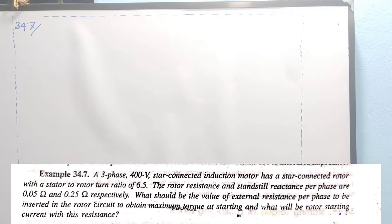Let's see, the question is: a three phase 400 volt star connected induction motor has a star connected rotor with a stator to rotor turn ratio of 6.5. The rotor resistance and standstill reactance per phase are 0.05 ohm and 0.25 ohm respectively.